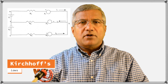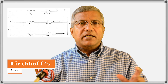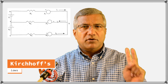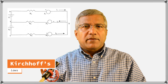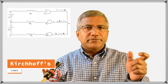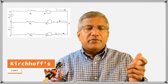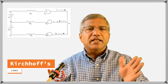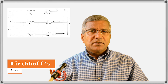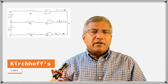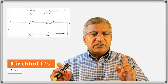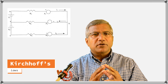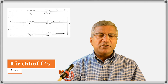In Kirchhoff's laws, we are going to check two laws: namely the current law and the voltage law. According to the current law, the total current coming into a junction is equal to the total current leaving the junction. In the voltage law, the total voltage in a closed network is zero.